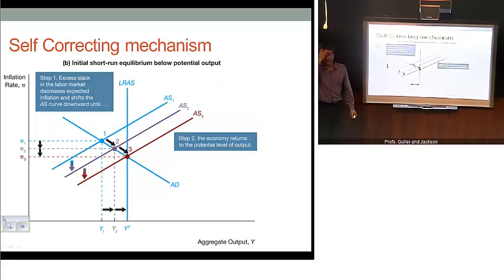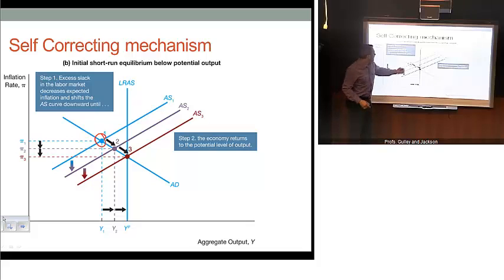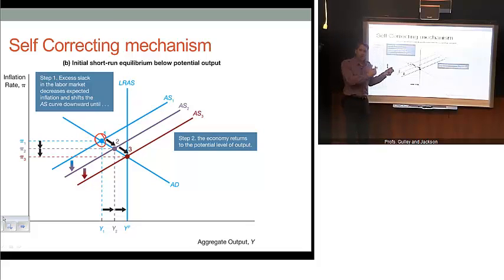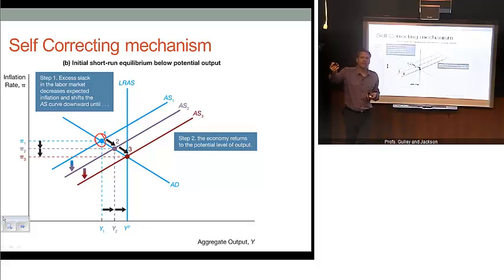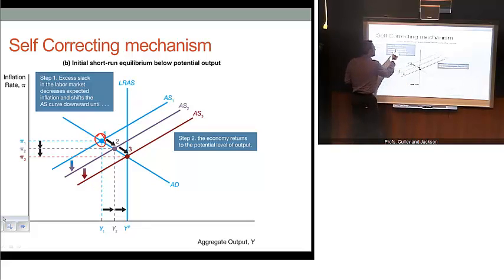We can also tell a similar analogous story on the flip side with the self-correcting mechanism. If we're sitting at point one, this represents a recessionary condition — output is below potential. That also means the unemployment rate is above the natural rate, because the natural rate and the potential level of output are synonymous. So if we're sitting at point one, there's slack in the labor market.